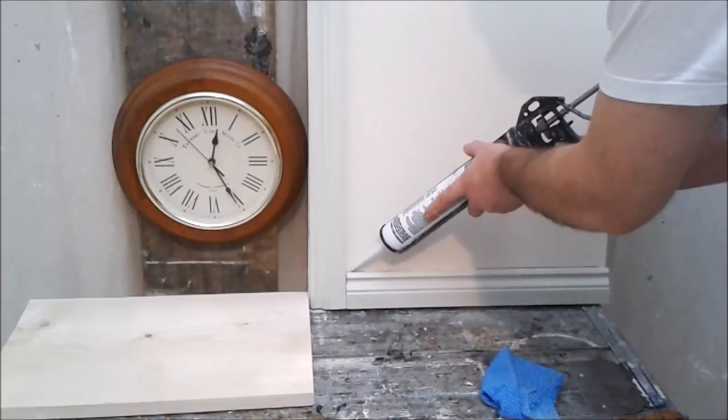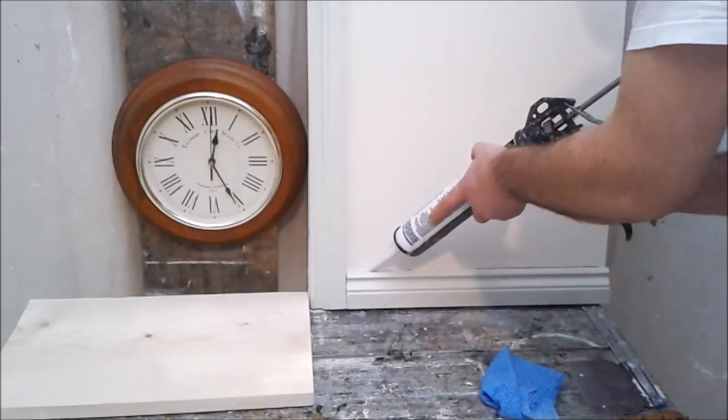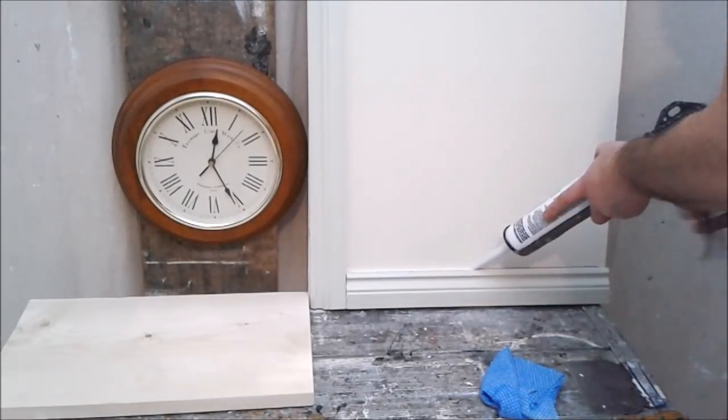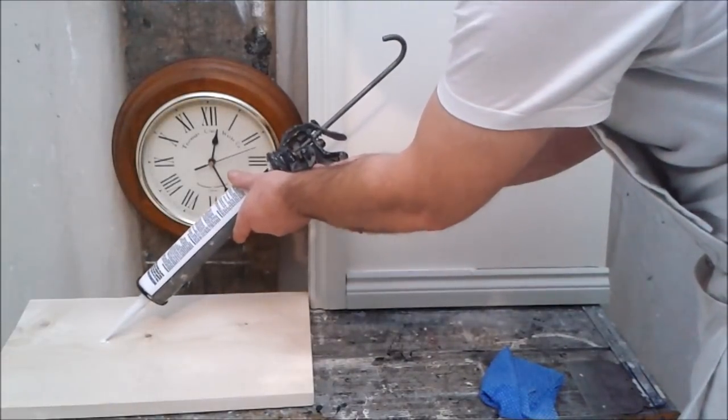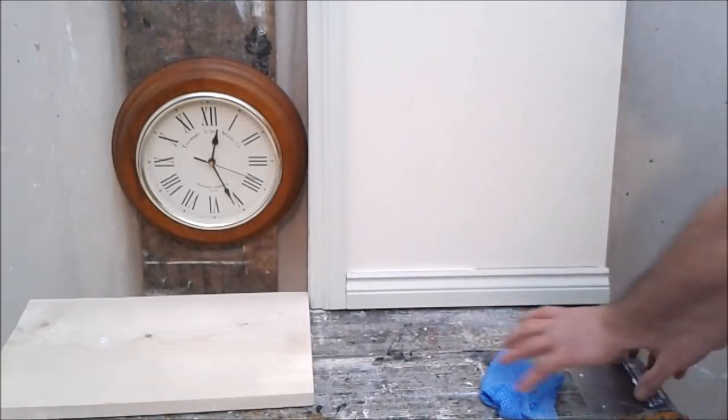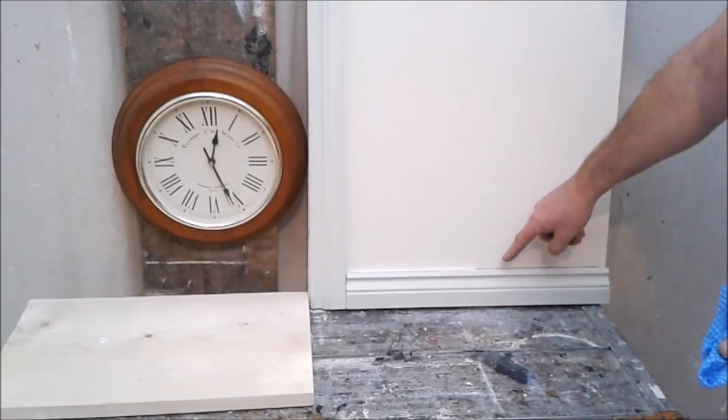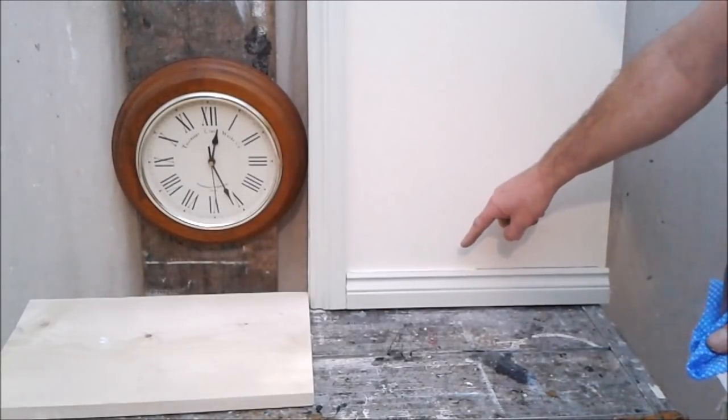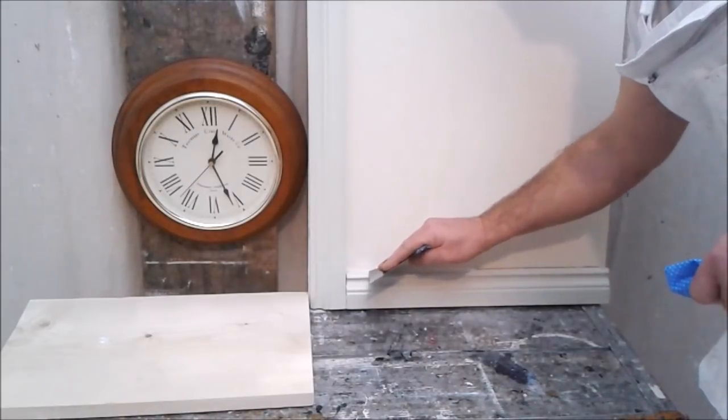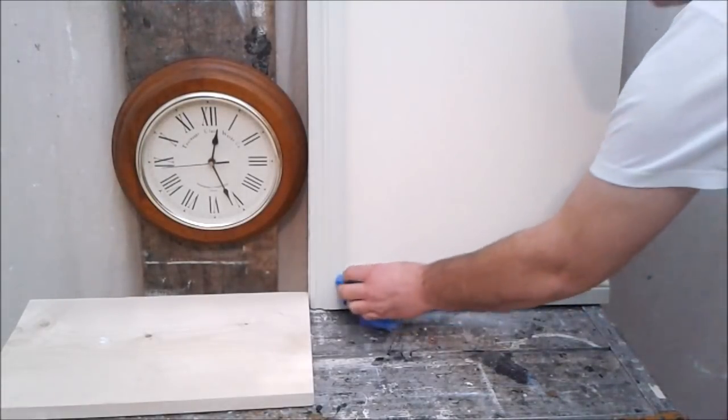First in with the cork. Put a blob there. Now with this it's better to use a spatula than your finger. You can use your finger, but what it can do if there's a large gap, you can create a slight concave which can gather dust. So smooth over with your spatula and just remove any excess.